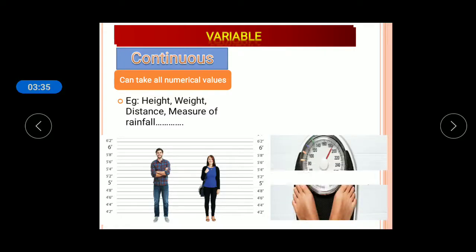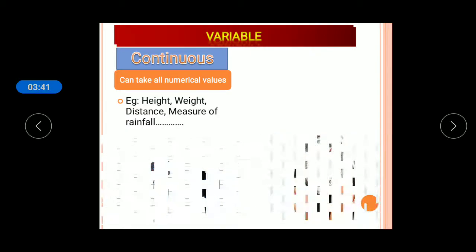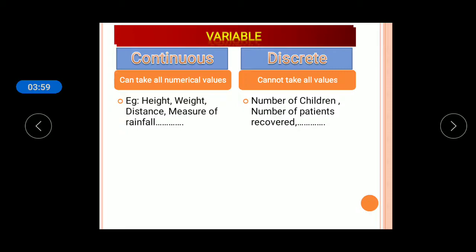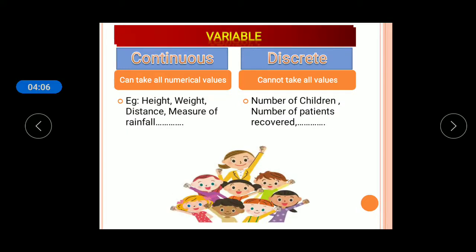Height can be represented as 40.8 kg or 50.6 kg and so on. A discrete variable cannot take all values — unlike continuous, discrete variables take only natural numbers. Examples include number of children and number of patients, which we cannot count in decimal points. This is a discrete variable.